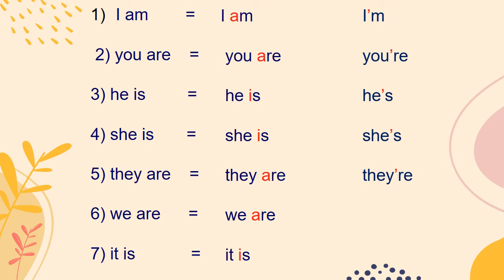Next: 'We are.' The letter 'a' is the first letter of the second word and should be removed. Then add the apostrophe and make sure to write the two words as one word. Last one: 'It is.' The letter 'i' is removed and the apostrophe is added. Always remember to write the two words as one word after keeping the apostrophe.